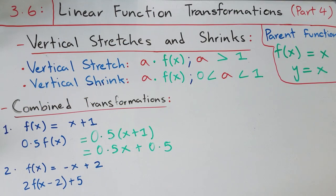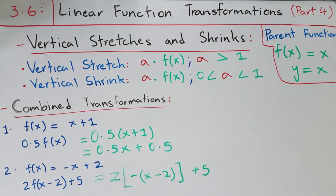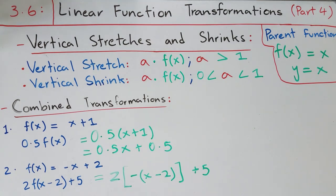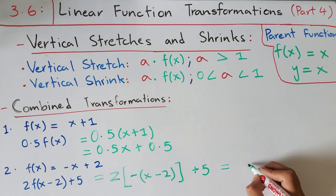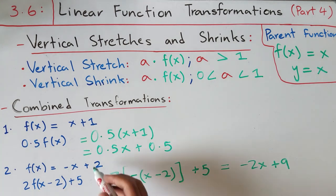In the second question, the original function is f(x) = −x + 2, and we need to find 2 times f(x − 2) + 5. The transformed function in unsimplified terms is 2 times (−(x − 2)) + 5, which simplifies to −2x + 9. By combining all transformations on −x + 2, we get a completely different function, −2x + 9, and both are related to the parent function y = x through these transformations.